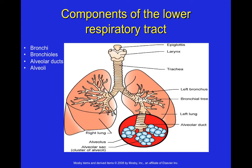The lower respiratory tract includes the bronchi (plural; singular: bronchus), bronchioles, alveolar ducts, and alveoli. The trachea bifurcates into the right and left bronchus, giving rise to the bronchial tree with further branching bronchi, then bronchioles. At the ends of the bronchioles are tiny alveolar ducts attached to alveoli, which are critically important for respiration.